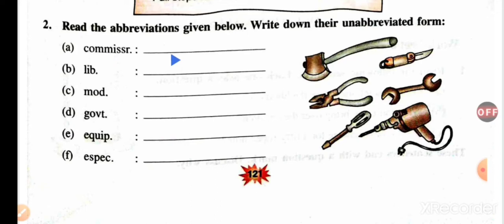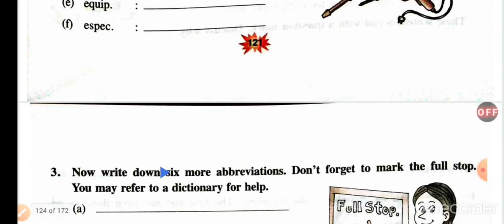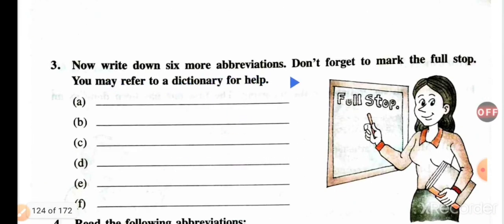Now write down six more abbreviations — don't forget to mark the full stops. You may refer to a dictionary for help. You can write things like: Commissioner — C-O-M-M-I-S-S-I-O-N-E-R; Library — L-I-B-R-A-R-Y; Modern — M-O-D-E-R-N; Government — G-O-V-E-R-N-M-E-N-T; Equipment — E-Q-U-I-P-M-E-N-T; Especially — E-S-P-E-C-I-A-L-L-Y. Examples: UNO, IMF, CBI, UNESCO.